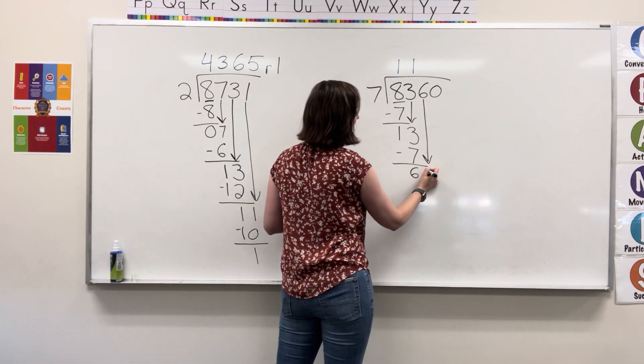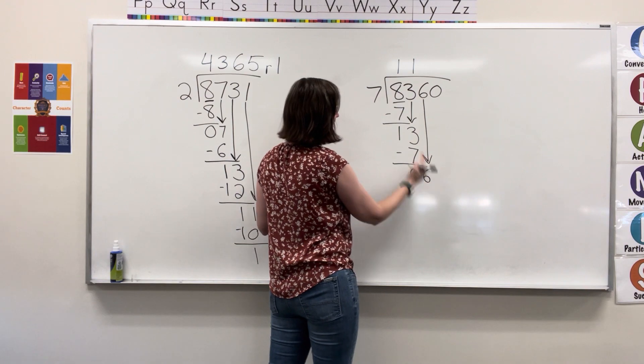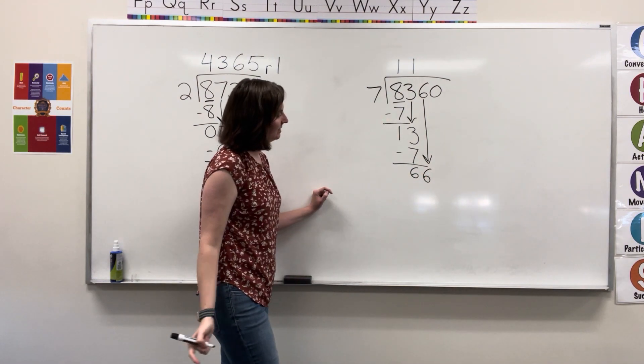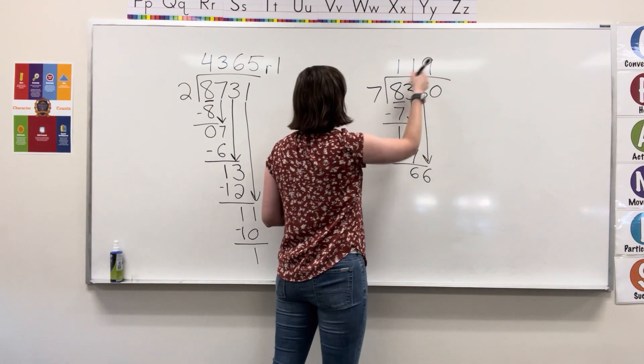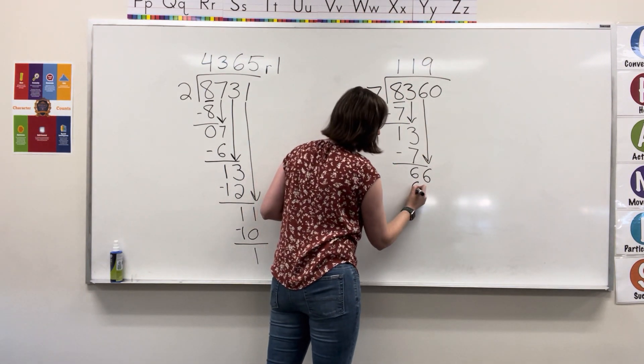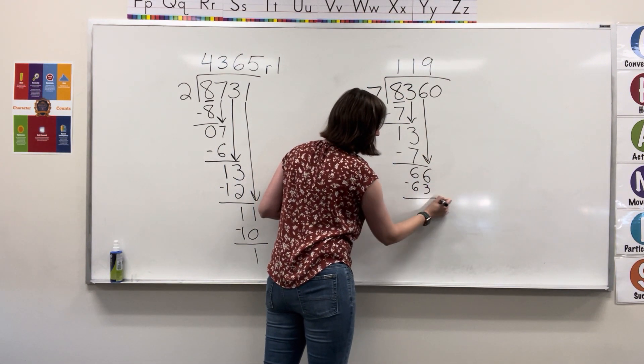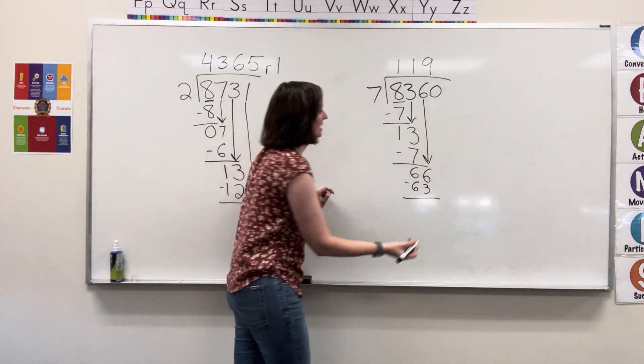Bring down your other six. Seven into sixty-six fits in nine times. Nine times seven is sixty-three. Sixty-six minus sixty-three gets me three.